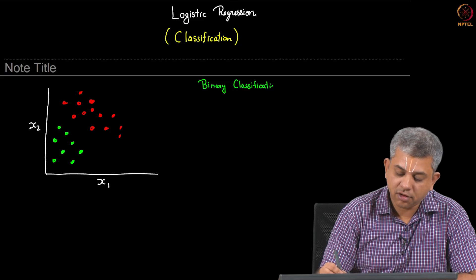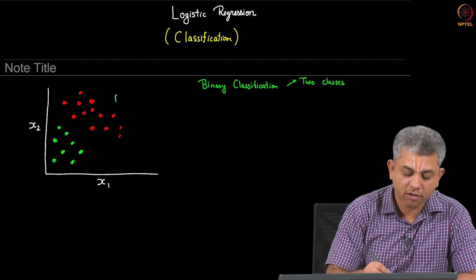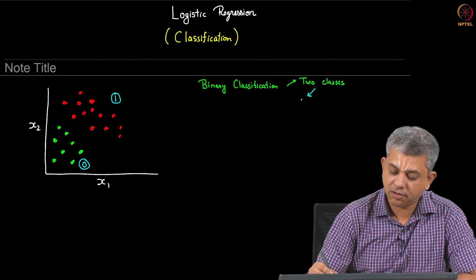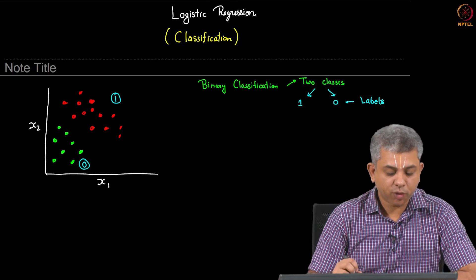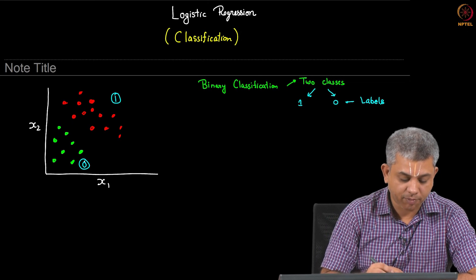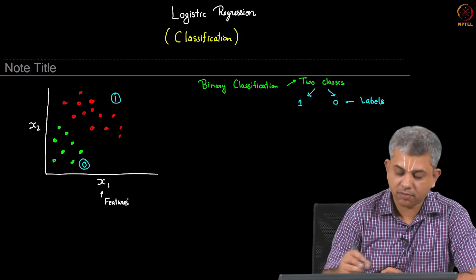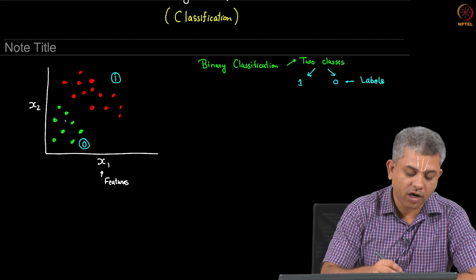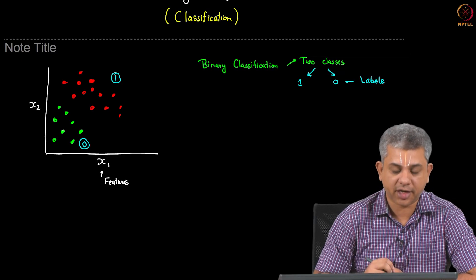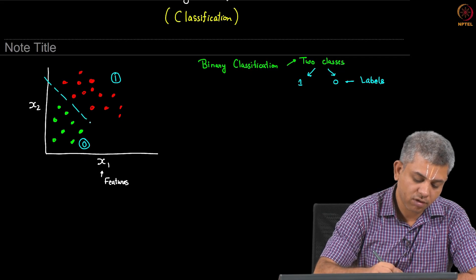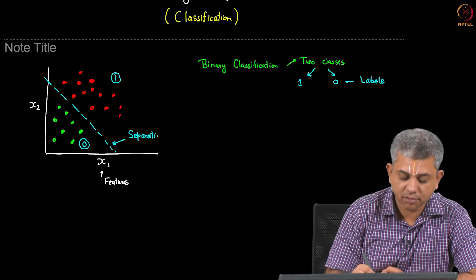By binary classification I mean that there are two possible classes; we label these classes simply 1 and 0. Suppose you collect some examples, and when you plot them — with x1 and x2 as two features — they nicely cluster to one side or the other, and intuitively we can draw a line separating the two: the classifying line.